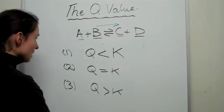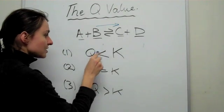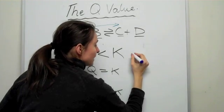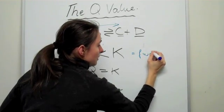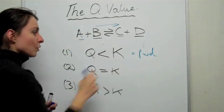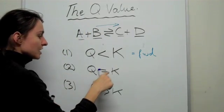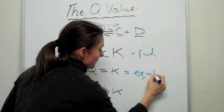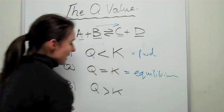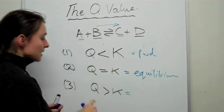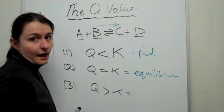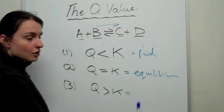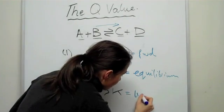If Q is smaller than K, then you need to increase Q, so you need to make more products and therefore you need to go forward. So more products. If Q is equal to K, that is what you want, you have achieved equilibrium. And finally, the last one, if Q is greater than K, that means you have too much product, okay, not enough reactants and you're going backward. So backwards.